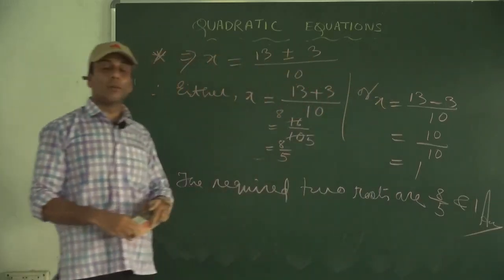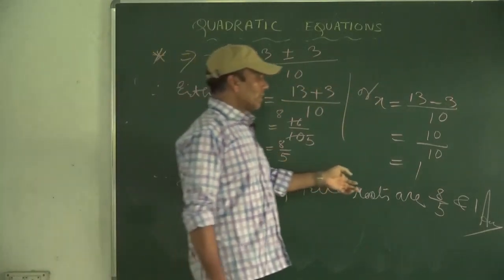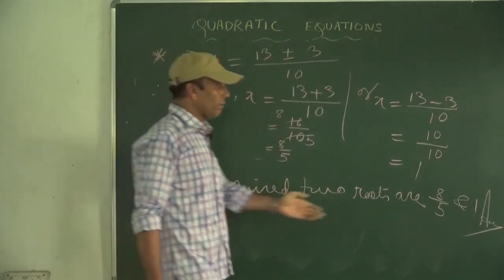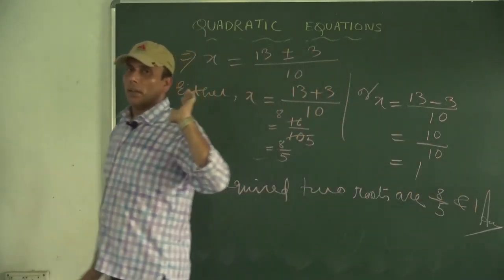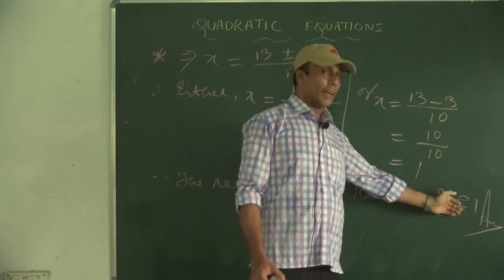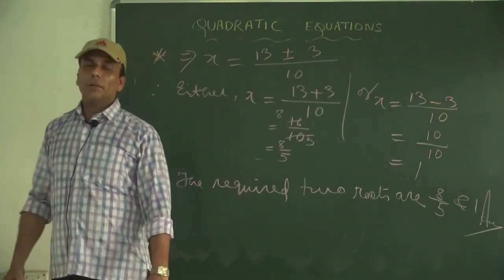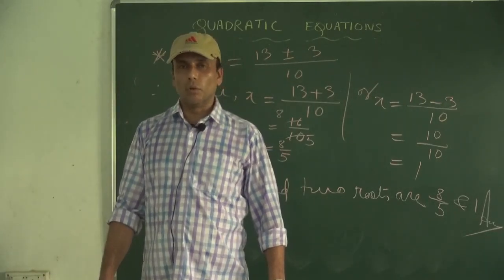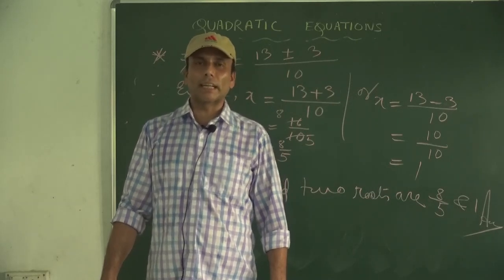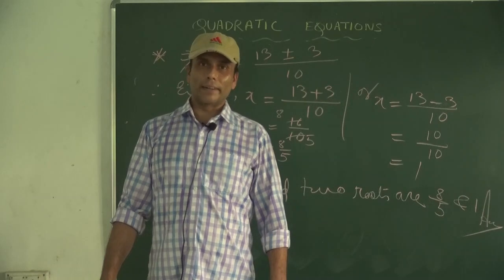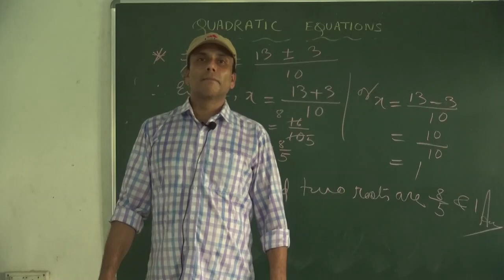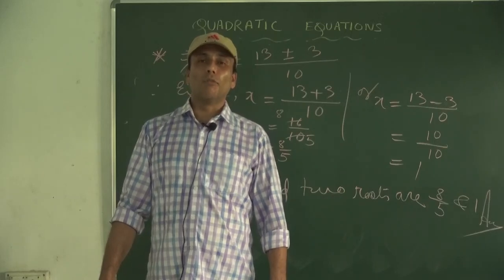If you compare this answer with the previous method, you will see that these two answers are same. By the method of factorization we got roots 8/5 and 1, and by the method of completing the square we got the same answer 8/5 and 1.